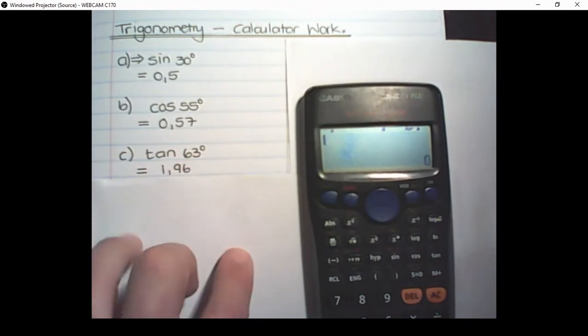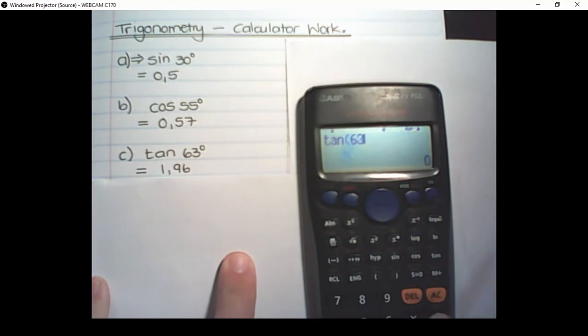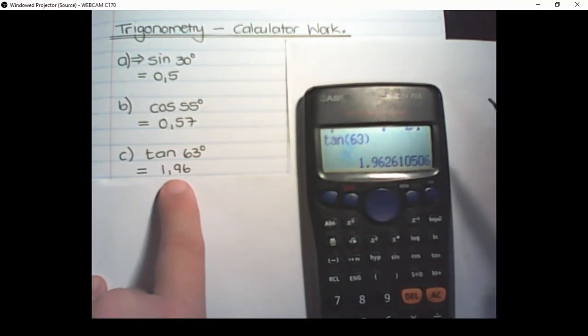Our next value is the tan of 63. So I put tan 63. Close the bracket. Equal. The answer is 1.9626 and rounding off is 1.96.